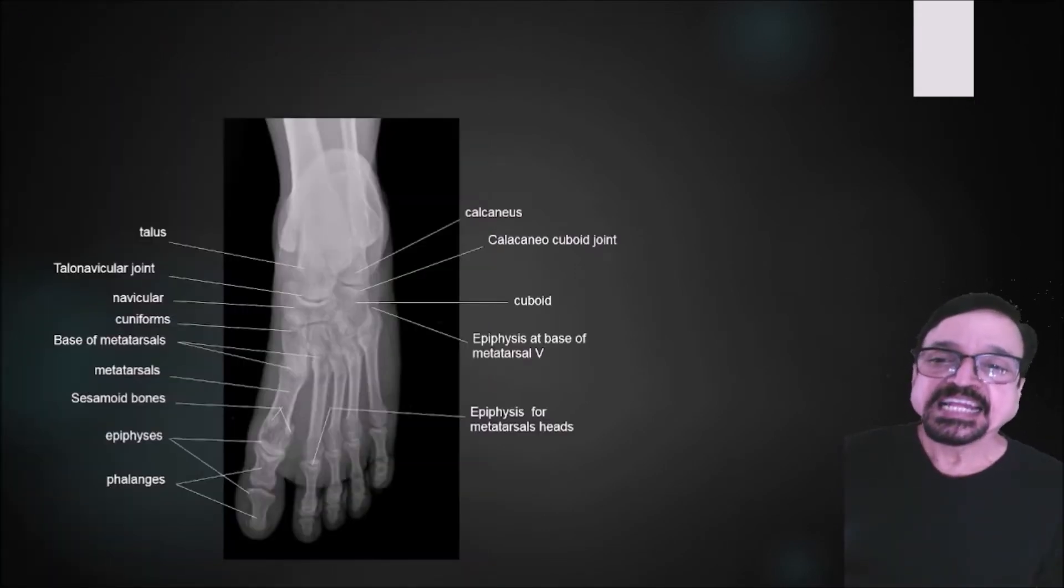Now here what we see is a part of calcaneus, then calcaneo-cuboid joint, that's cuboid, that also you see is not well seen, then the phalanges, then the sesamoid bones, metatarsals, base of the metatarsals, cuneiform, navicular, and talonavicular joint, and talus.